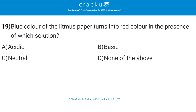Blue litmus paper turns red in the presence of which solution? The correct answer is A — acidic. The main use of litmus is to test whether a solution is acidic or basic. Blue litmus paper turns red under acidic conditions, and red litmus paper turns blue under basic conditions.